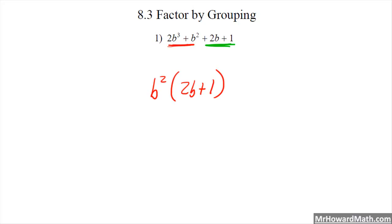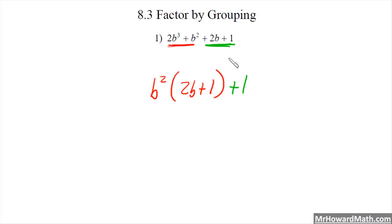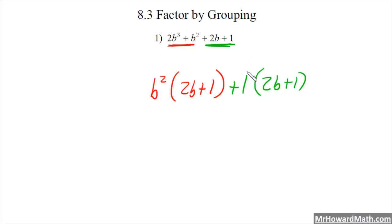Then we look at the last two terms in green. The greatest common factor there is just positive 1. So we put our parentheses and write what is left: 2b divided by 1 is 2b, and 1 divided by 1 is plus 1. We check: 1 times 2b is 2b, 1 times 1 is 1. Check. So everything works.